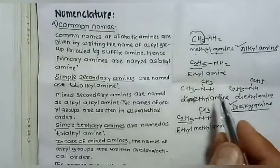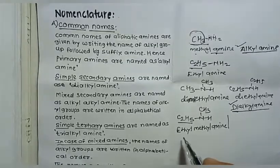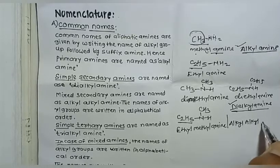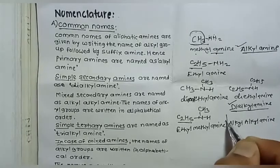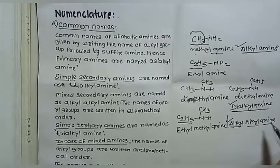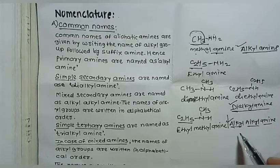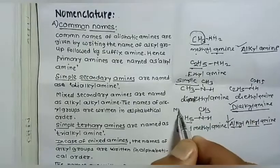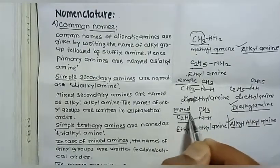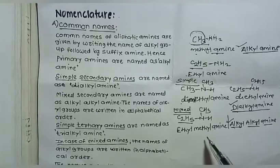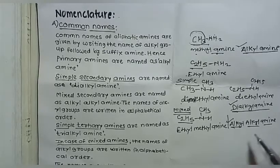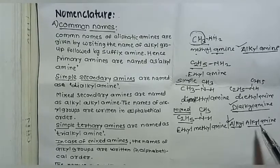To summarize: simple secondary amines are named as dialkyl amines, while mixed or unsymmetrical secondary amines are named as 'alkyl alkyl amine', with the alkyl group names written separately in alphabetical order. The names are written only as words.